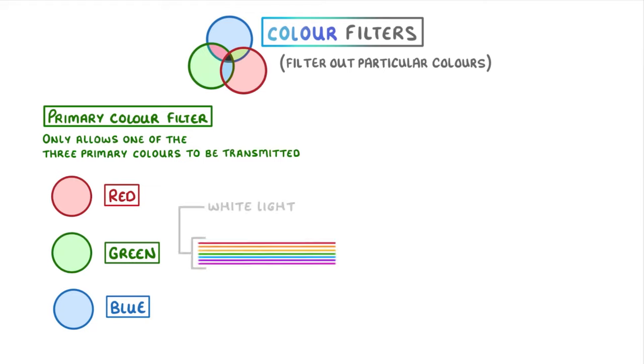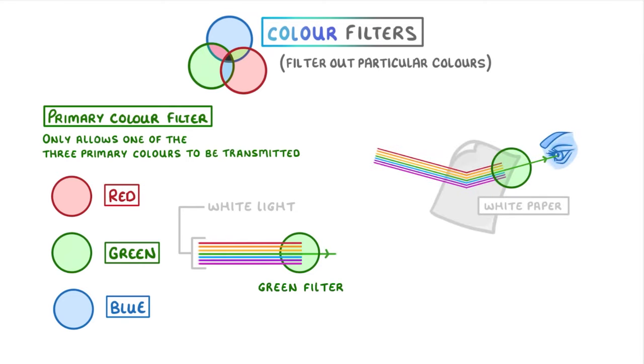For example, if we put white light, which remember contains all the different wavelengths of light, through a green filter, then only the green wavelengths would get through. So if we looked at white paper through this filter, then it would appear green because only the reflected green waves would make it through.